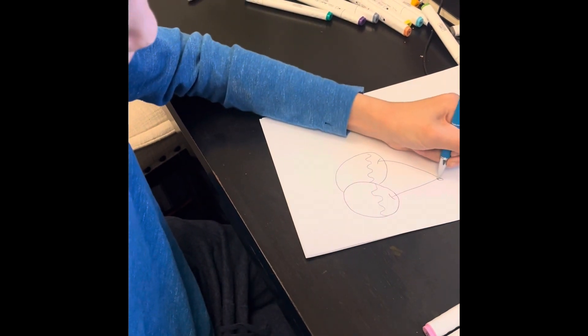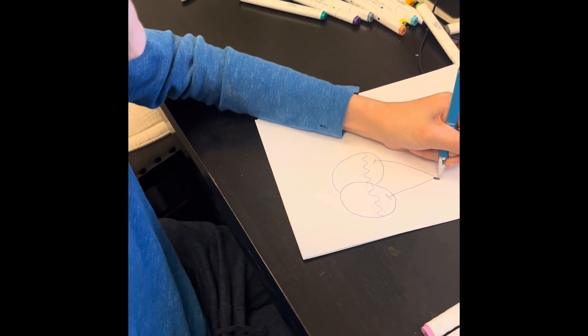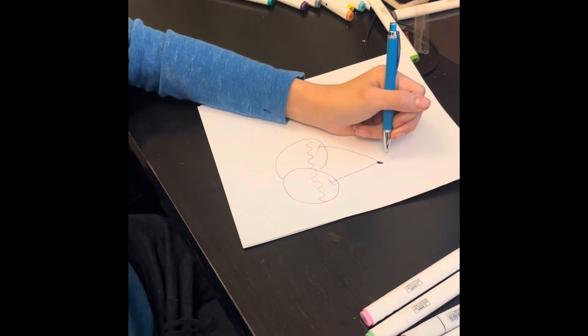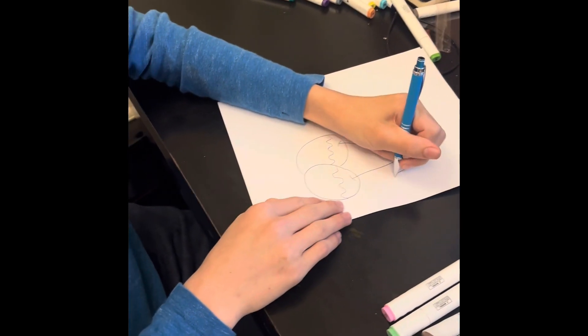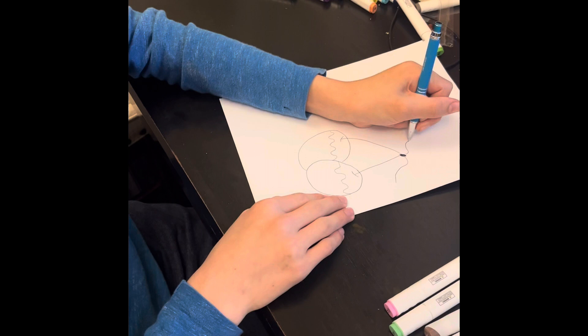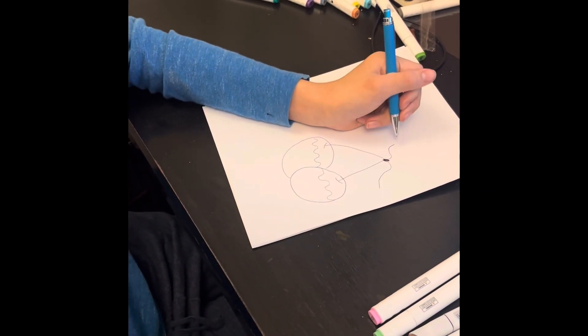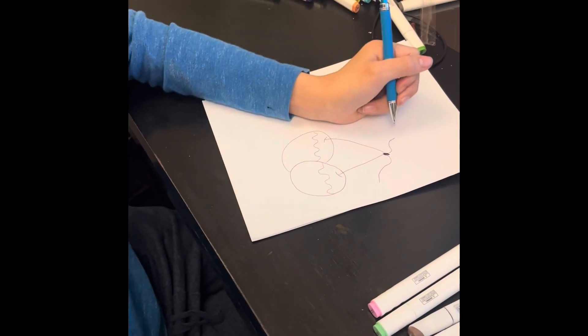Then, we draw a black dot on the top of the cherries. Then, we draw a wavy line next to the black dot.